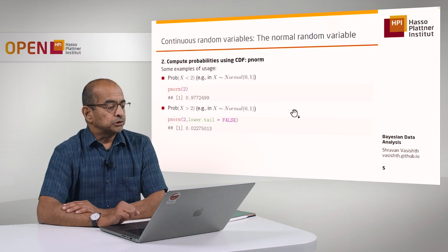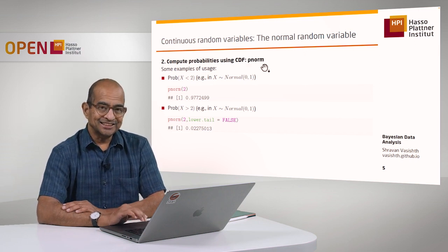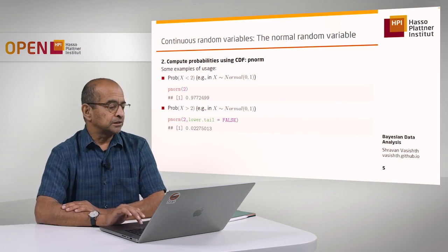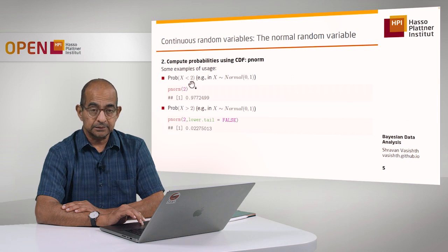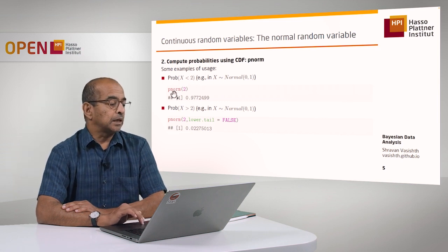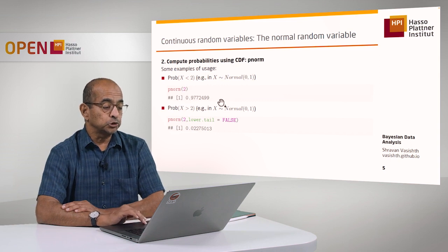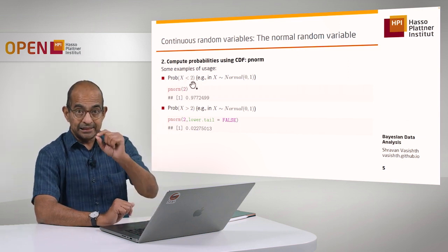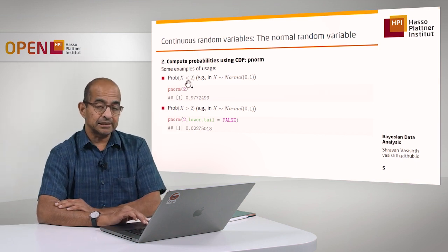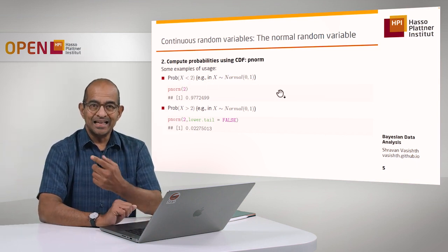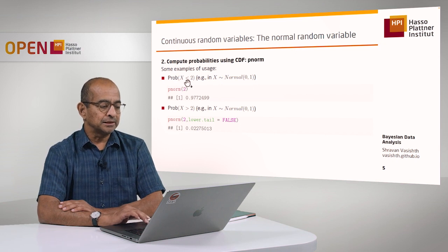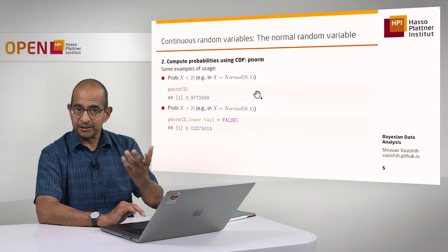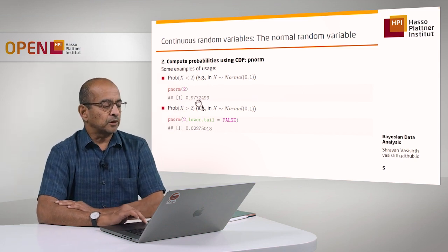The next example is the pnorm function, which is the cumulative distribution function of the normal distribution. I can ask questions like: what's the probability of observing a value of 2 or something less than that? I compute that with pnorm(2). This gives me the probability of observing 2 or something less than that. Whether I write strictly less than 2 or less than or equal to 2 gives the same probability, because the probability of exactly getting 2 is 0. So that's my cumulative probability of 2 or less.